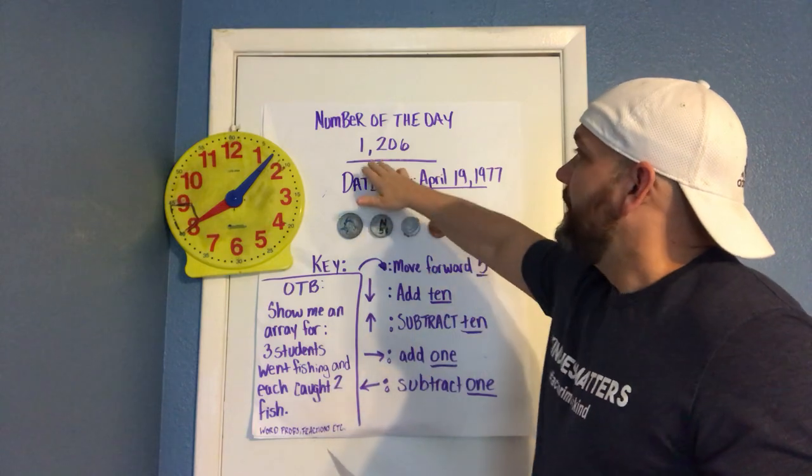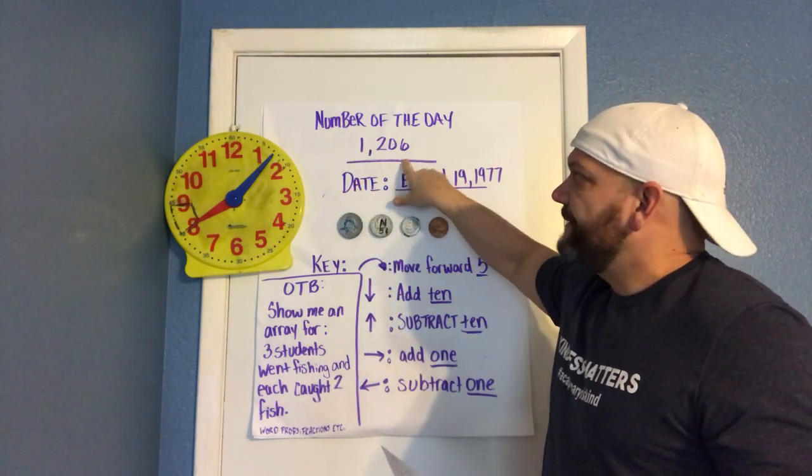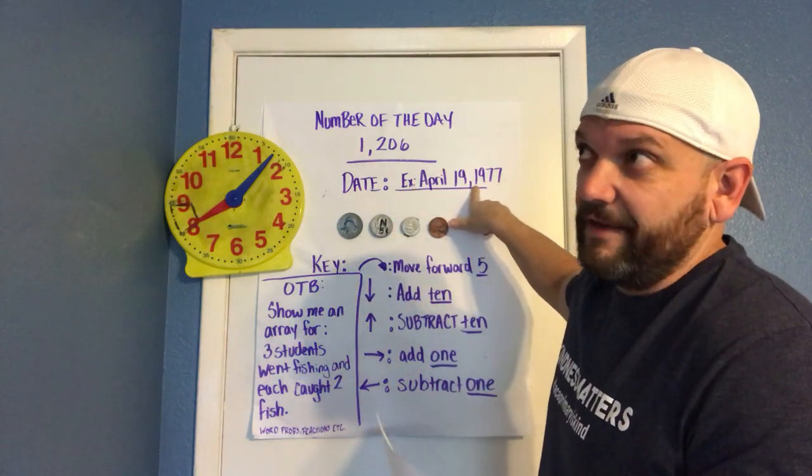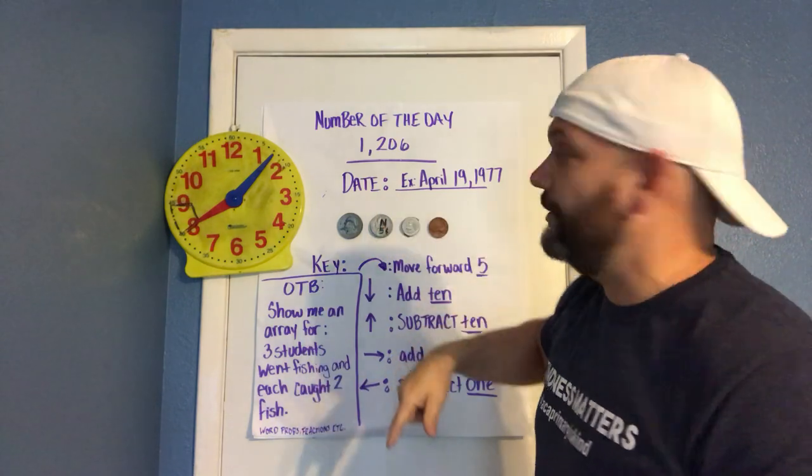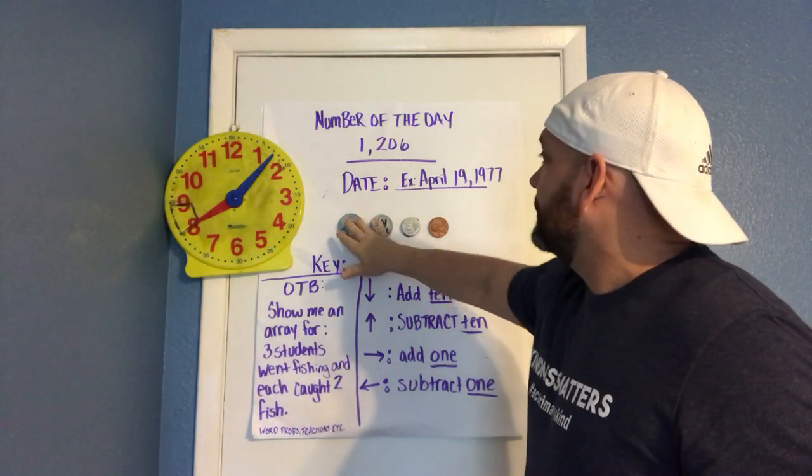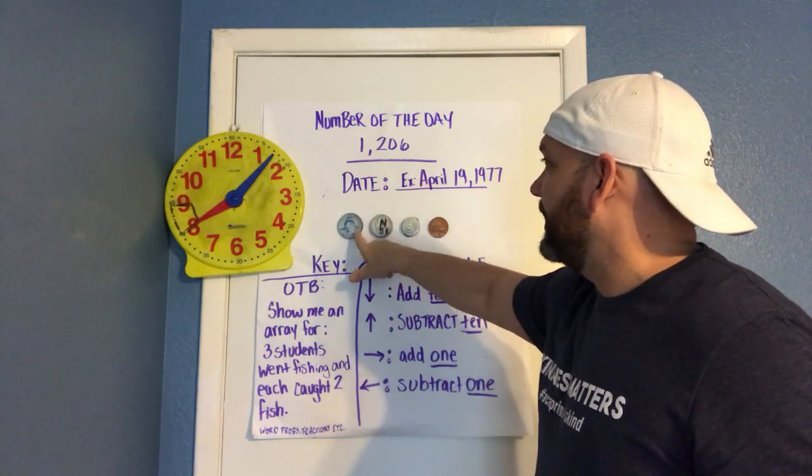You can see the number that I chose is 1206. The date, this is actually not today's date, it's just an example—this is my birthday, so you can figure out how old I am. Then I would typically have some coins. These are magnetic, but I just taped them up here. I would have coins not necessarily in order, they could be mixed up, but the kids have to decipher the coins.